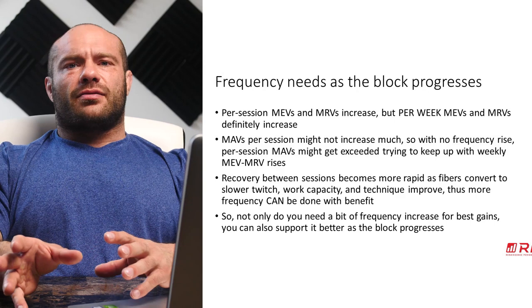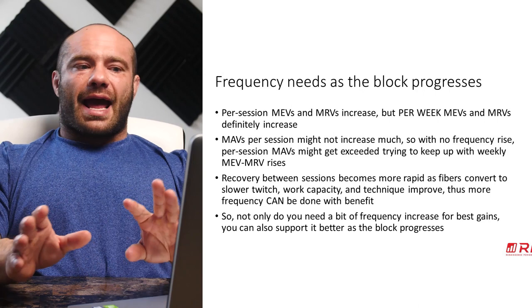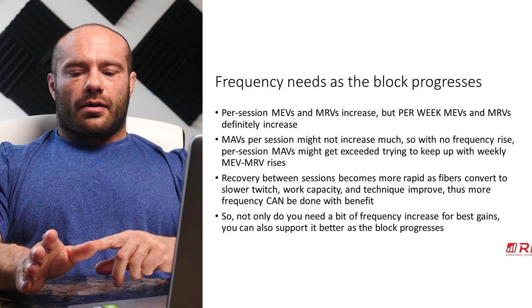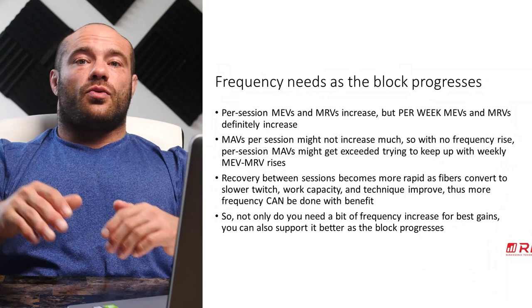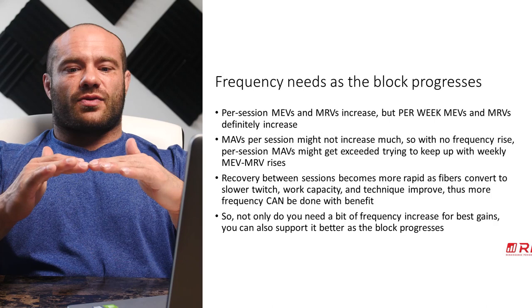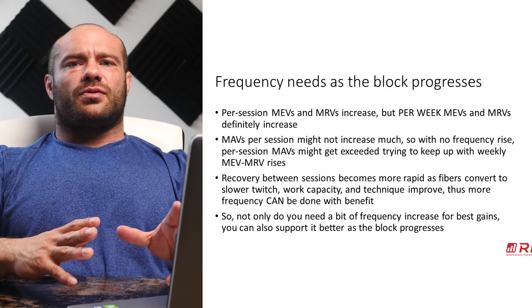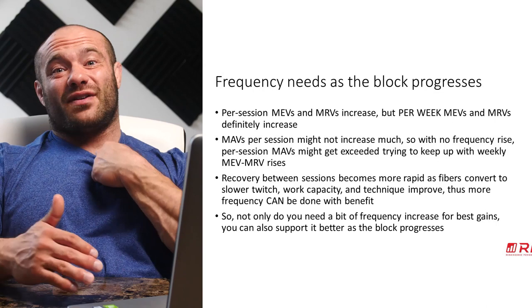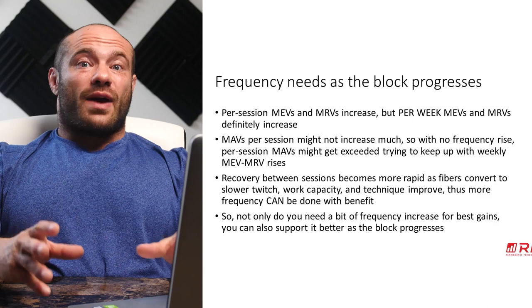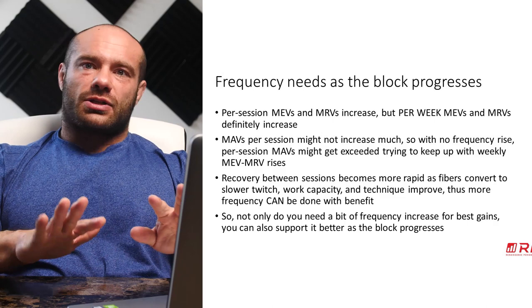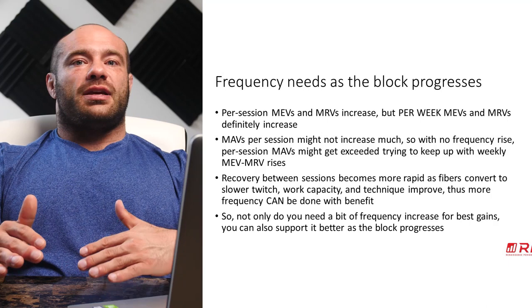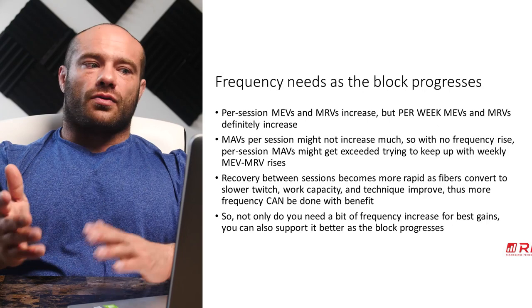Your MAV per session might not increase much — you may still get your maximum adaptive volume at roughly eight to ten sets per session — but your weekly MRV and MEV go up. So in order to chase your MRV and stay above your MEV, you might need to raise training volume by adding frequency. If you're doing eight sets per session and your MEV is now 20, adding a fourth session brings you to 32 sets — well clear of your MEV and approaching your MRV. Both of those are good things.